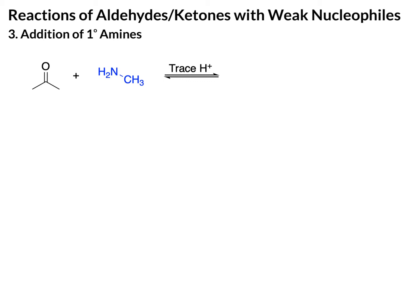So let me first just draw the product for you. We're taking acetone as the ketone and methylamine, and we're using trace acid — just a tiny bit of acid enough to get the reaction going. The product of this reaction is going to have the carbonyl double bond replaced with a double bond to the nitrogen, and that nitrogen still has the CH3 attached. The byproduct is just water. The product we get here is called an imine — a new functional group where you have a doubly bonded nitrogen. Sometimes you'll also hear this referred to as a Schiff base, and it is a basic nitrogen because of the nitrogen's lone pair.